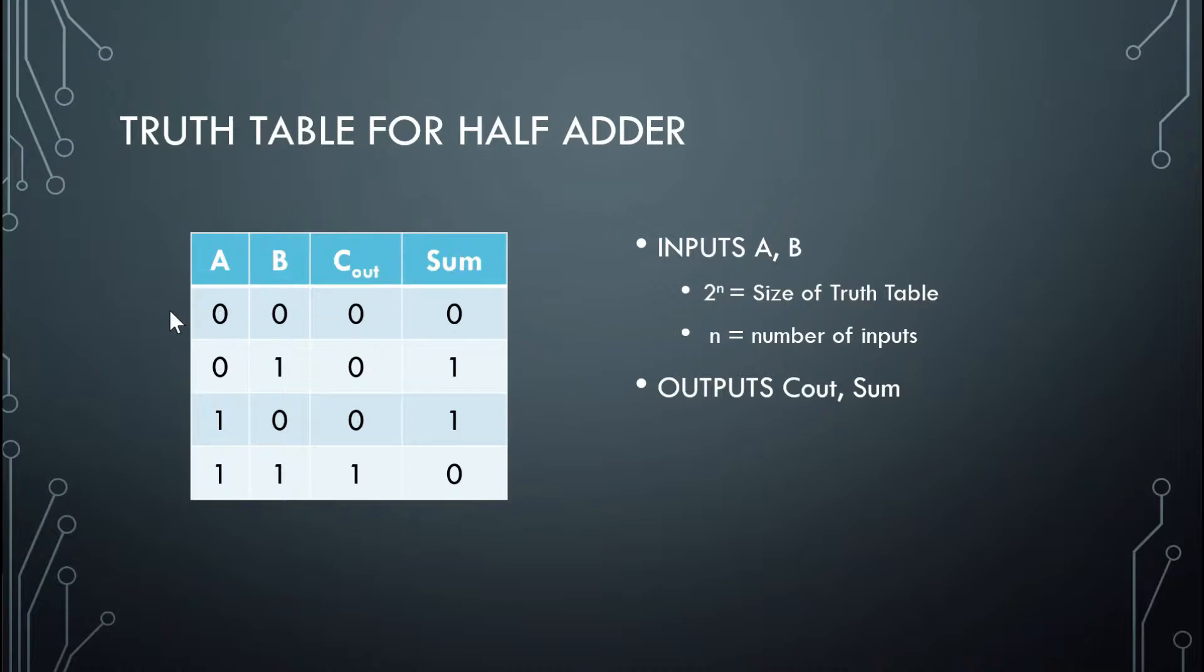So we start our truth table by simply counting from 0 to 3: 00, 01, 10, 11, which is 0, 1, 2, 3, which is 2 to the 2, which equals 4, so here's our 4.